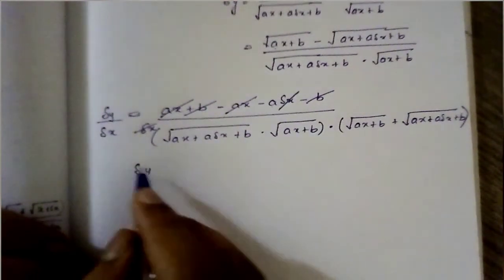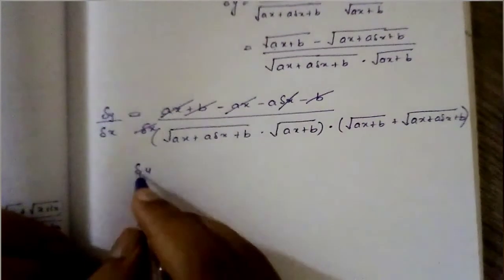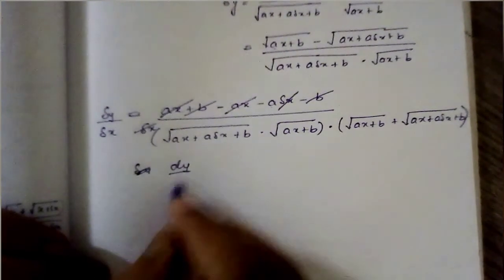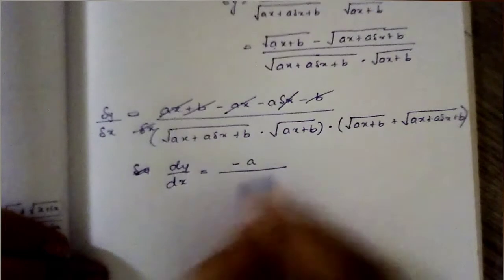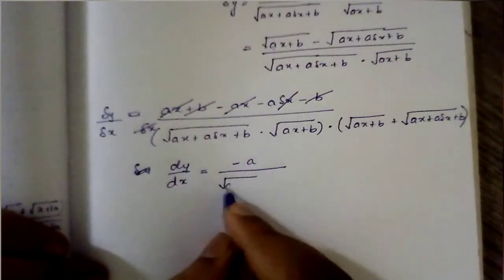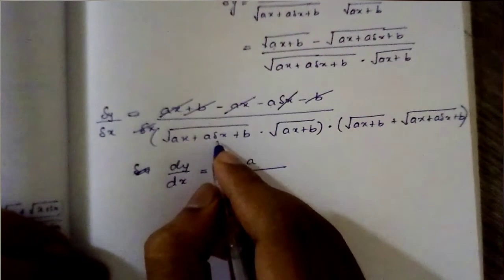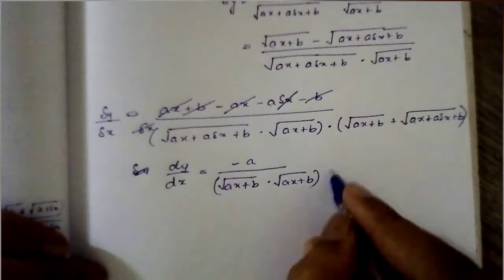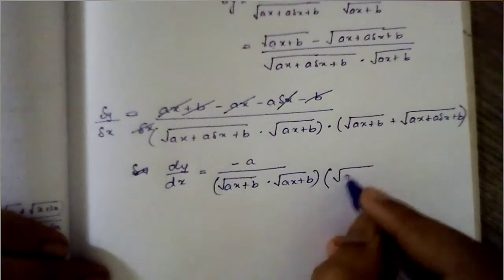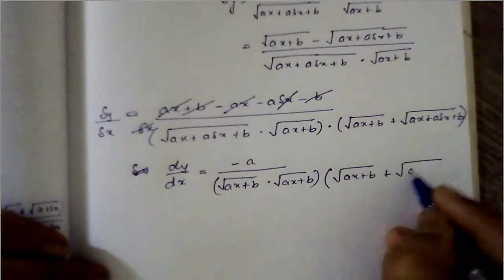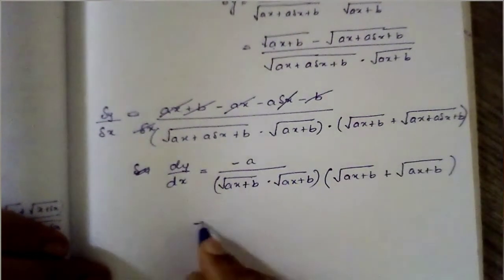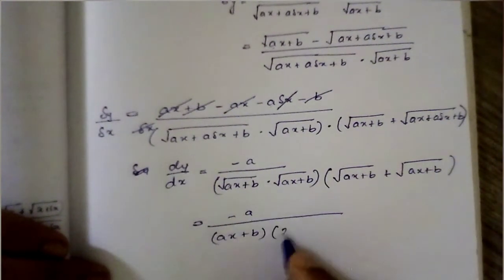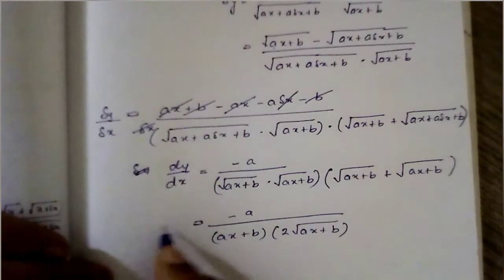Del y by del x gives minus a. Applying the limit as del x tends to 0, dy by dx equals minus a by root(ax + b) into root(ax + b) plus root(ax + b), which simplifies to minus a by (ax + b) into 2 root(ax + b). This is the answer for part B.